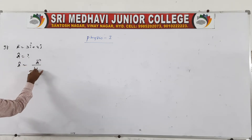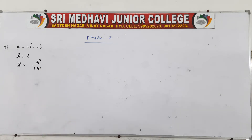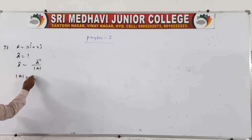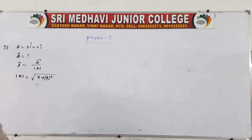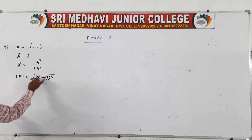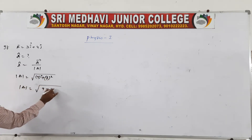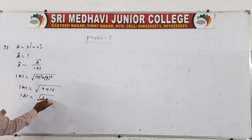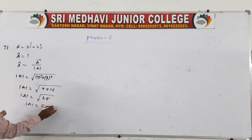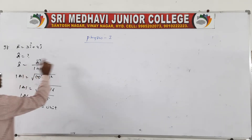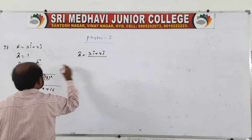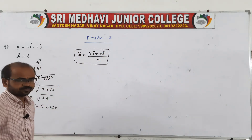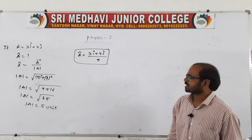We use a-cap equals a-vector divided by magnitude of a. The magnitude of a equals root over (3² + 4²) = root over (9 + 16) = root over 25 = 5 units. Therefore, a-cap equals (3i-cap + 4j-cap) / 5. This is how we calculate the unit vector.